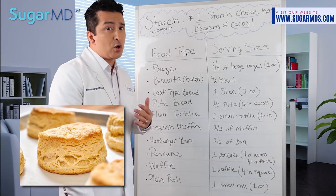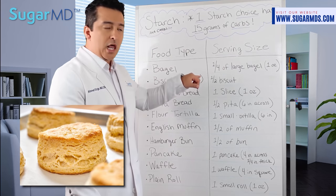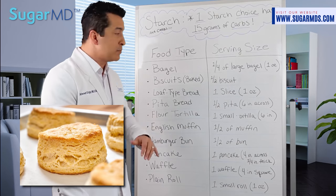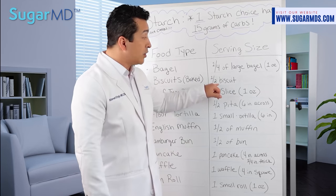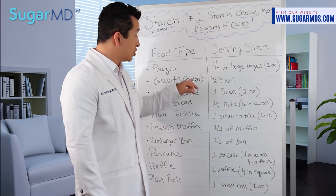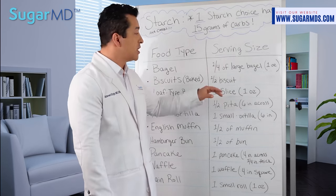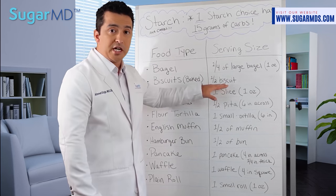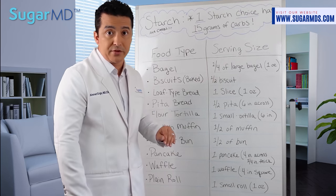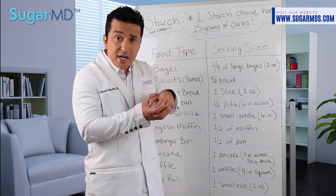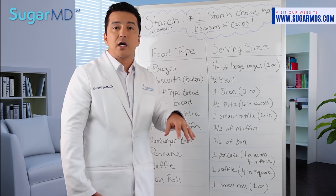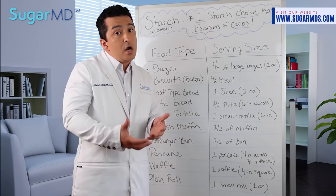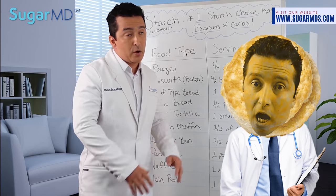Biscuits are already fully loaded with butter, so keep that in mind. Half a biscuit is 15 grams of carbs, so a whole biscuit is 30 grams. However, the 30 grams from a biscuit will spike your blood sugar more than 30 grams from half a bagel, because of the fat content — though you still need to know how much carbohydrate you're ingesting. The size of the biscuit matters too; I'm talking about the standard biscuit you find in stores, not a restaurant-sized one.